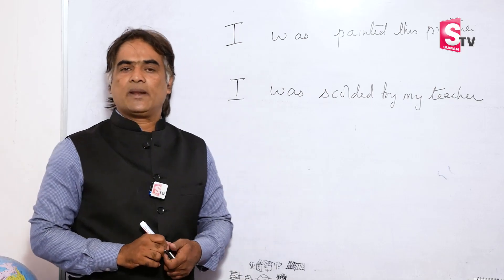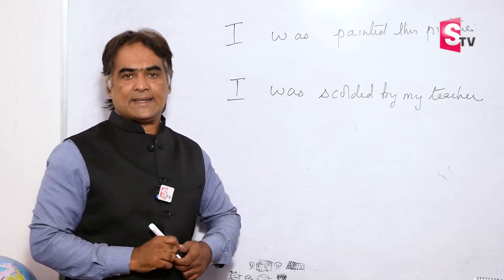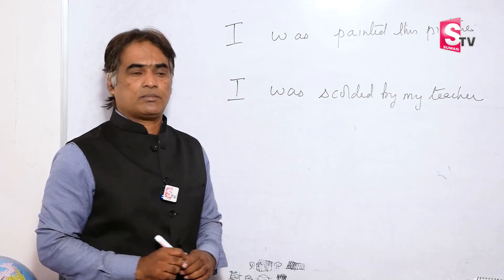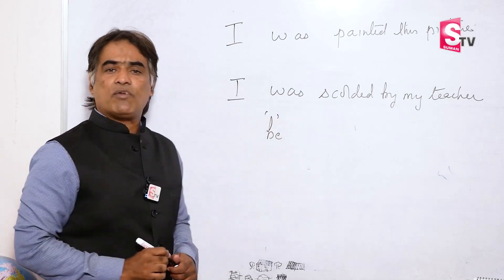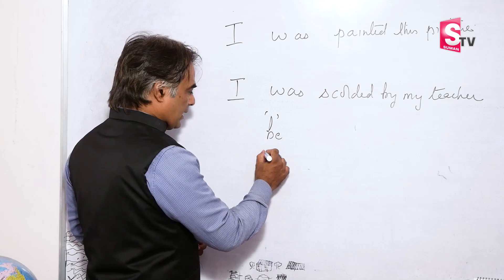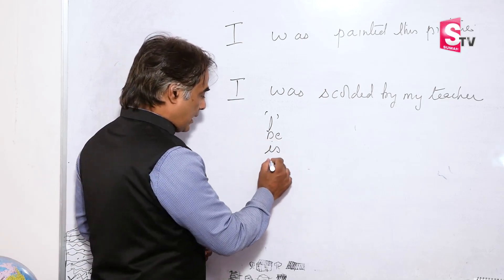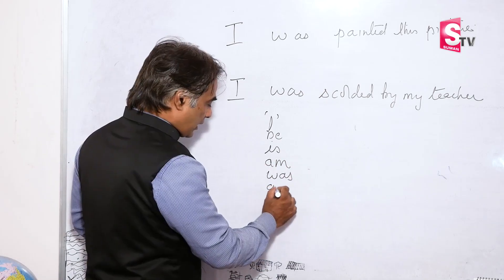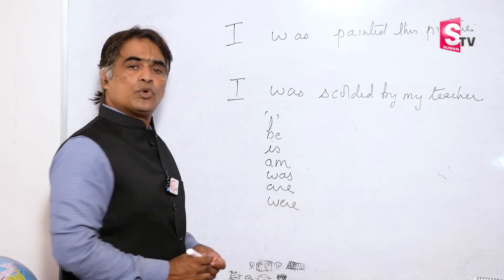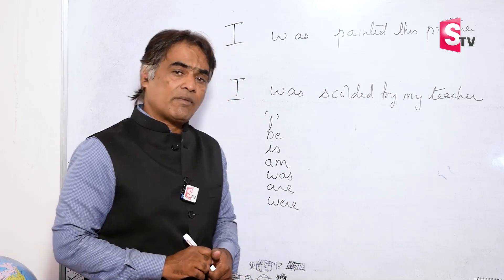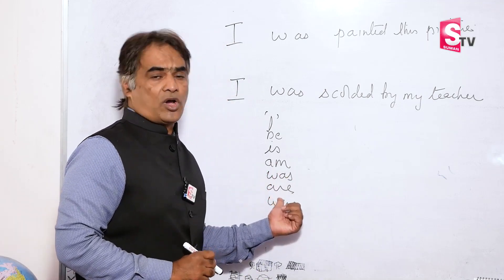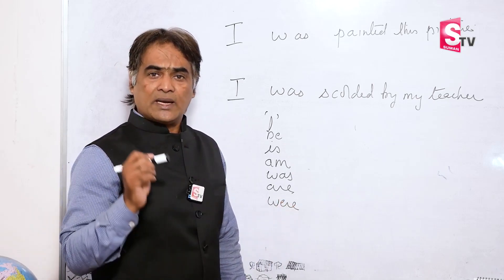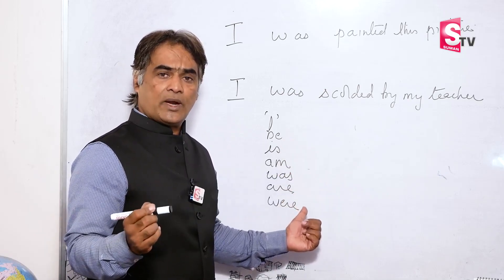The correct sentence is: 'I was scolded by my teacher.' Now for you to understand this, you have to first understand there are five B forms of verb: is, am, was, are, were. Students of Telugu medium and Hindi medium generally have a problem understanding should they use a B form or not. There is a very simple trick to help you understand whether the usage of the B form is required or not required.